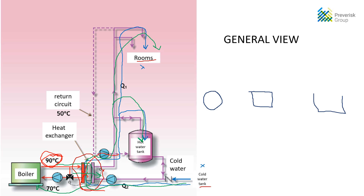The water from the boiler at 90 degrees or more goes through the heat exchanger and comes back to the boiler to be reheated, because the temperature is transferred to the water coming from the cold water tank. So the temperature of the water coming from the boiler is transferred to the cold water, which then goes to the rooms and showers. There are two different systems.